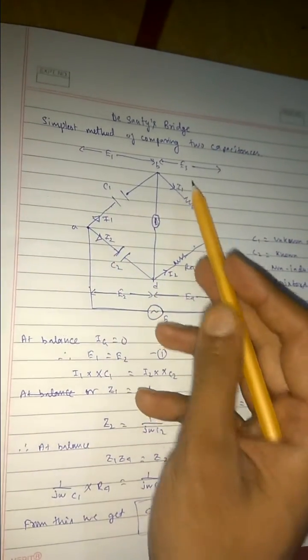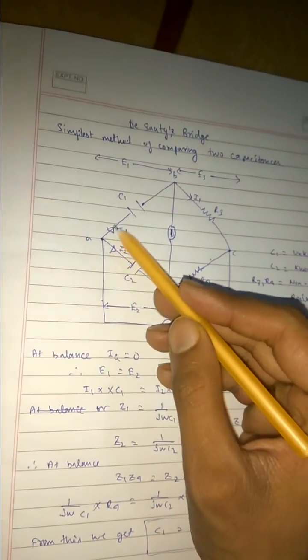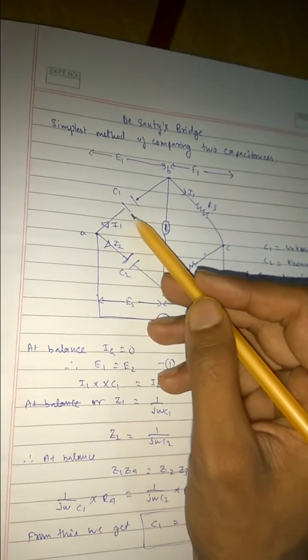E1 is equals to E2 and E3 is equals to E4. Now since E1 is equals to E2, what we have is I1 into C1, that is the impedance XC1.